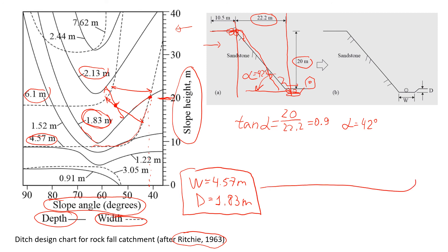This means that if we want to build the catchment, the ditch, so the width will be around 4.57 meters and we have to excavate it 1.83 meters, that will be the depth.